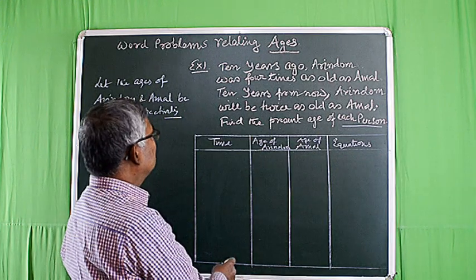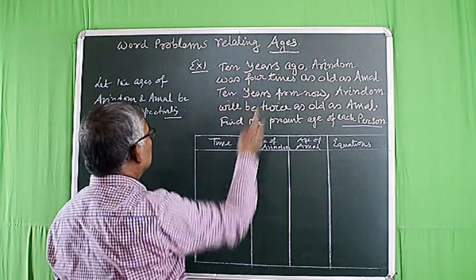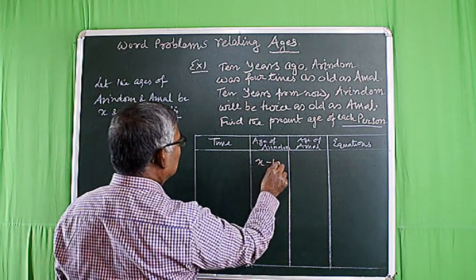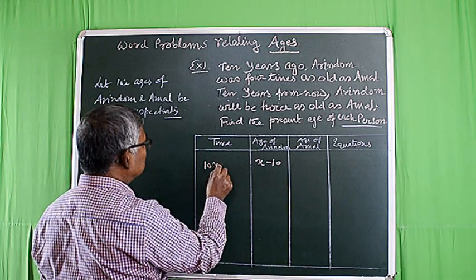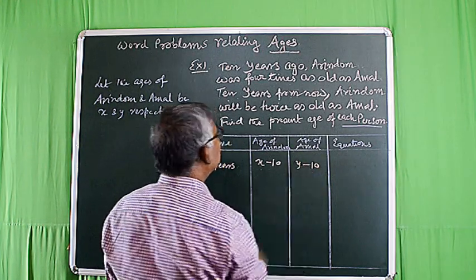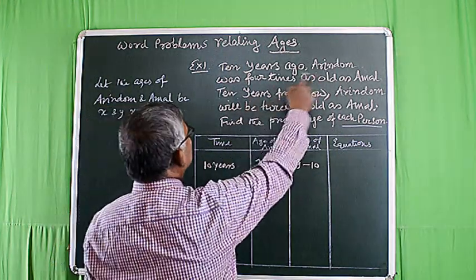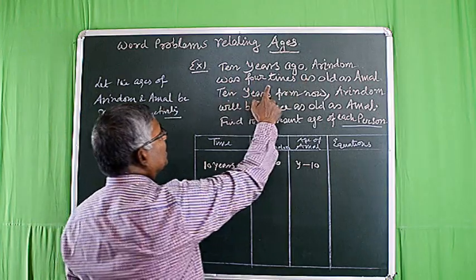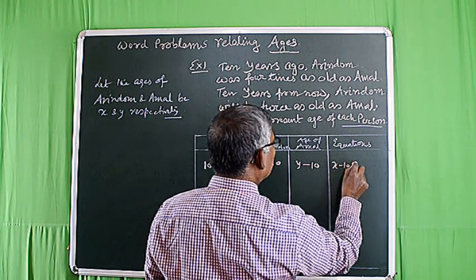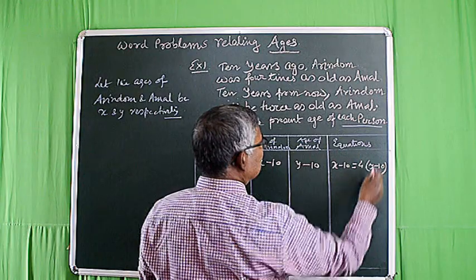To solve the problem, let us consider how we write the problem in tabular form. Ten years ago, the age of Oringham will be X minus 10, and the age of Ongal will be Y minus 10. The given condition is that Oringham was four times as old as Ongal, so X minus 10 is equal to 4 into Y minus 10. Suppose it is equation number 1.